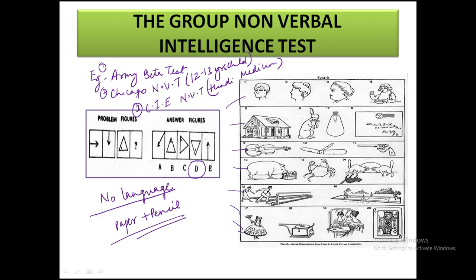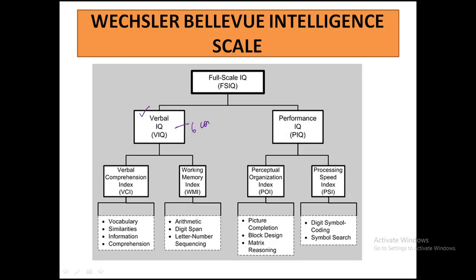Next is the Wechsler Intelligence Scale. This scale has two parts: in the verbal section there are six sub-tests, and in the performance section there are five sub-tests. Scores are checked across these components, and a matrix is used to determine the IQ level based on the total score. This scale covers both non-verbal and verbal assessments.